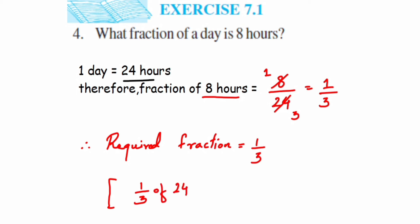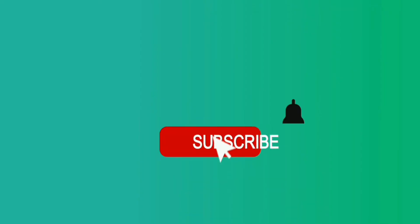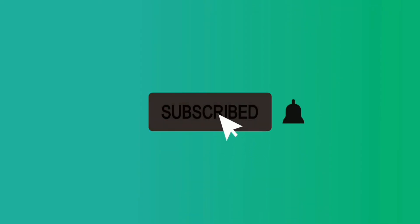Let me cross-check the answer: one third of 24 hours means one third multiplied by 24. You can cancel to get 8 hours. So the fraction is 1 upon 3. It was quite a simple problem. I hope it's clear — in case you have any questions or doubts, you can drop a comment below. Thank you so much for watching.